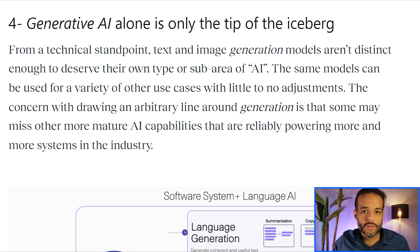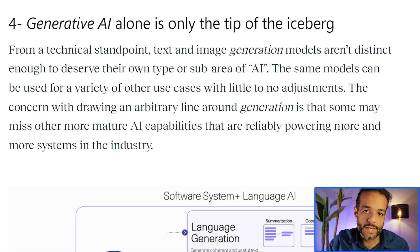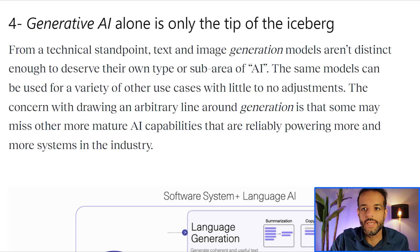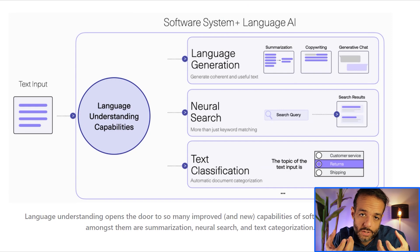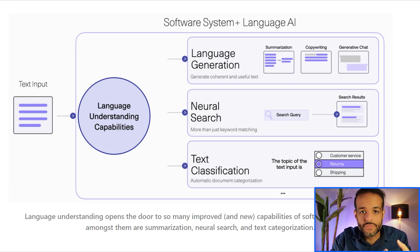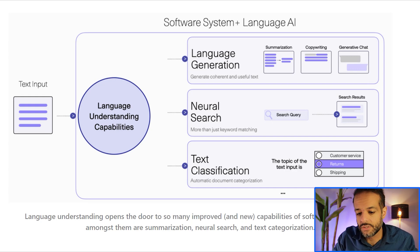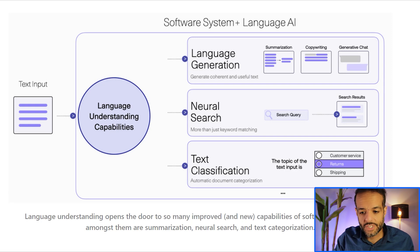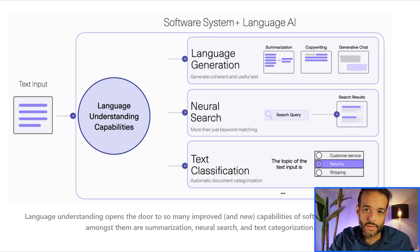My fourth and final point is that generative AI is not really the blanket term that covers everything exciting in AI. Much of what is super exciting in AI is not generative in nature, but it's able to create more reliable systems that are also surprising and extremely useful. If we think of these models as having the two capabilities of language understanding and language generation, we can think about a new class of systems that build on the language understanding capability — where generation is only one of multiple things we can do. Within generation, we can talk about generative chat, summarization, copywriting, or telling the model to write an email or an article.